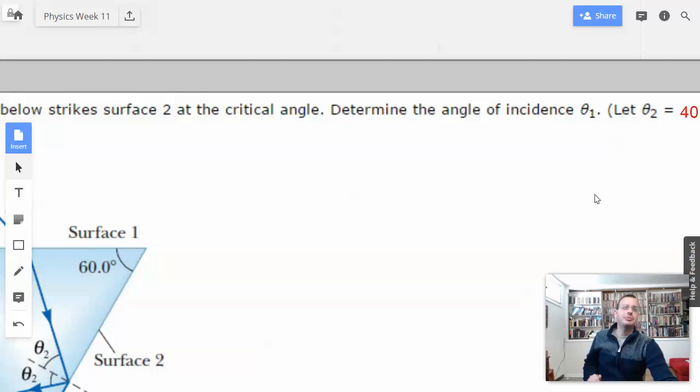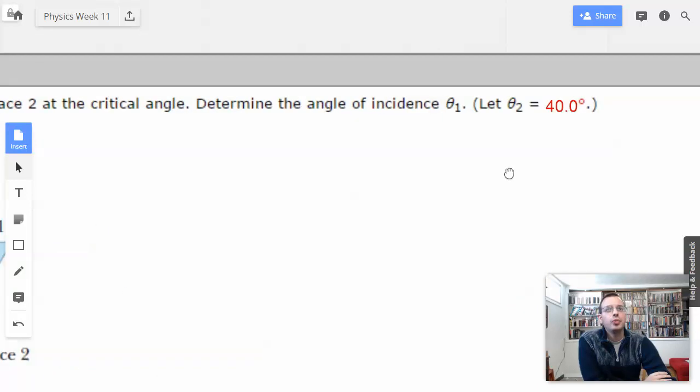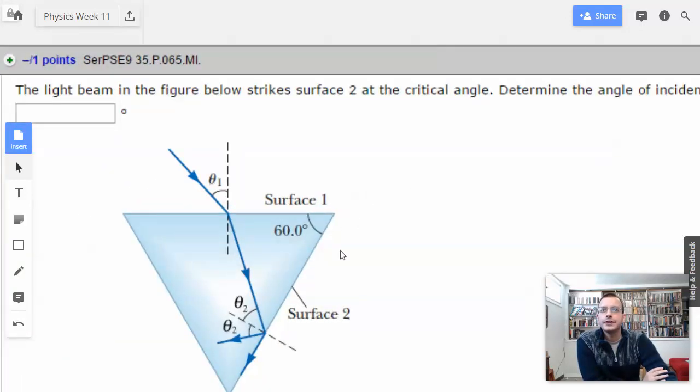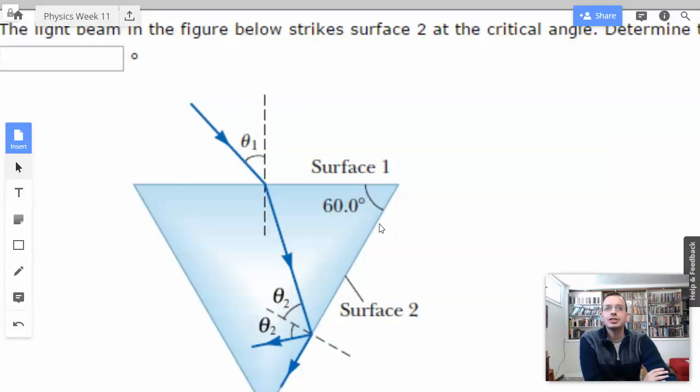For some reason that reminds me of Mortal Kombat fatality, the fatal angle. Determine the angle of incidence, theta 1. Let theta 2 equal 40. Okay, so we're going to be using Snell's Law here, pretty darn sure.